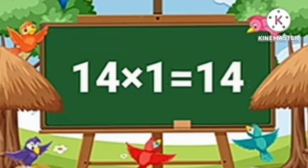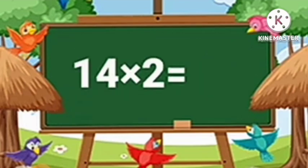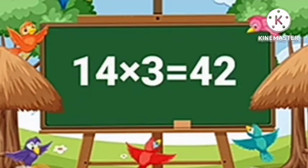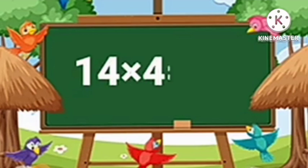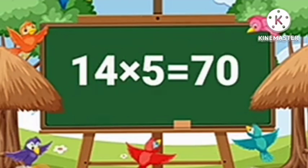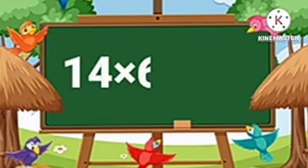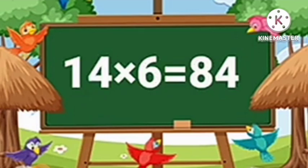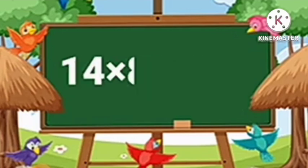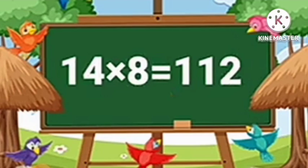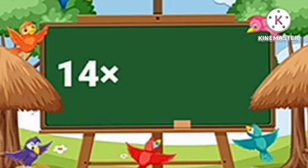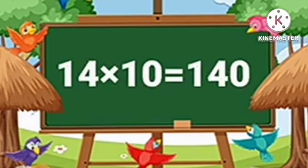Table of Fourteen. Fourteen-One's are Fourteen. Fourteen-Two's are Twenty-Eight. Fourteen-Three's are Forty-Two. Fourteen-Four's are Fifty-Six. Fourteen-Five's are Seventy. Fourteen-Six's are Eighty-Four. Fourteen-Seven's are Ninety-Eight. Fourteen-Eight's are One Hundred and Twelve. Fourteen-Nine's are One Hundred and Twenty-Six. Fourteen-Ten's are One Hundred and Forty.